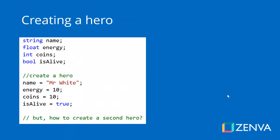Imagine you want to create a character in your game, and to describe that character you want to have a variable for its name, for its energy, the amount of coins, and keep track of whether the character is alive or not. So if we're just using variables, we could create a variable for each one of these things and define its name, energy, coins, and if it's alive or not.